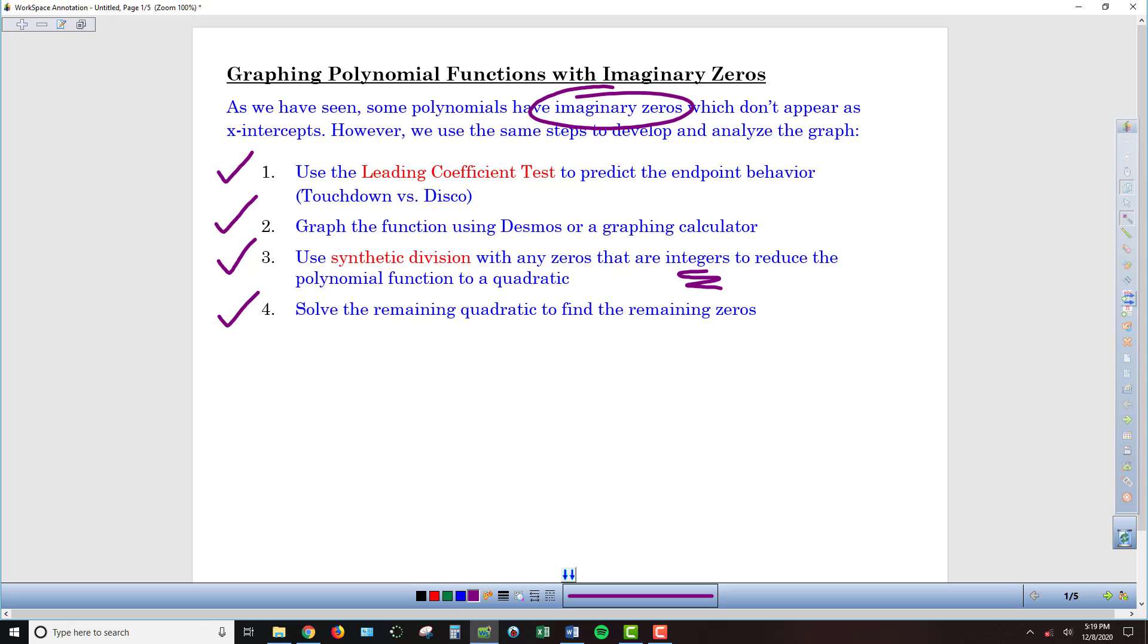Unlike the irrational zeros from the previous lesson, we don't even see a decimal value. They don't appear on the graph, but we can see evidence that there must be some imaginary zeros. The only way we're going to find them is via algebra.